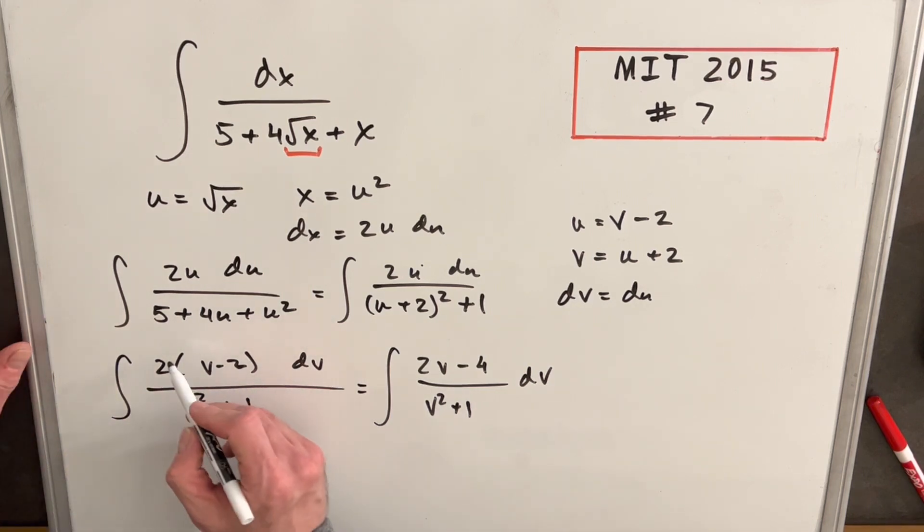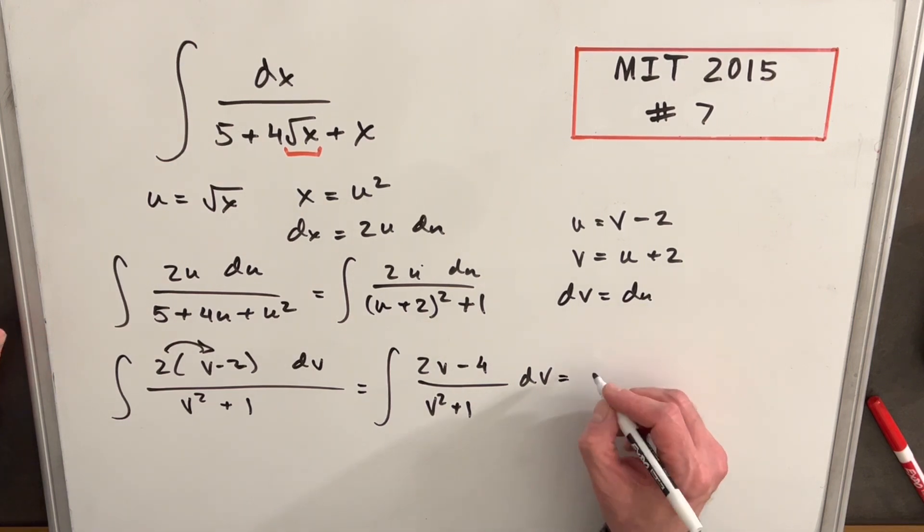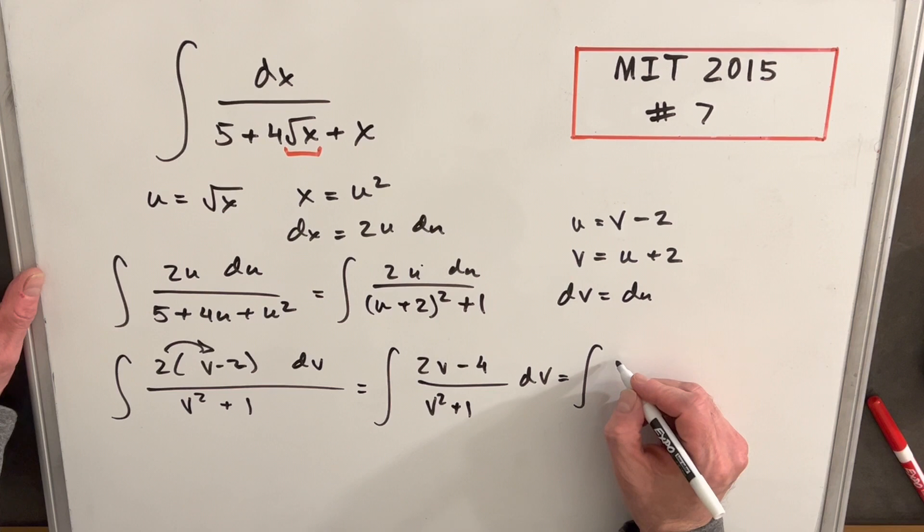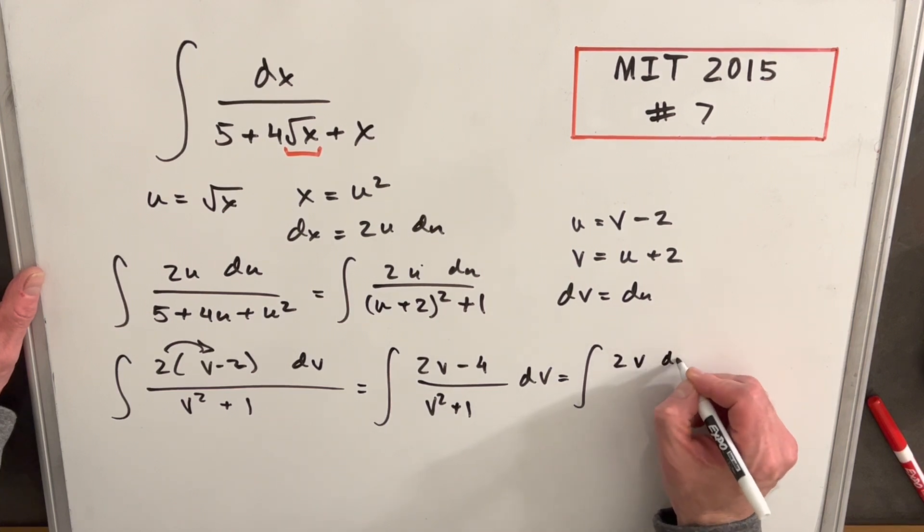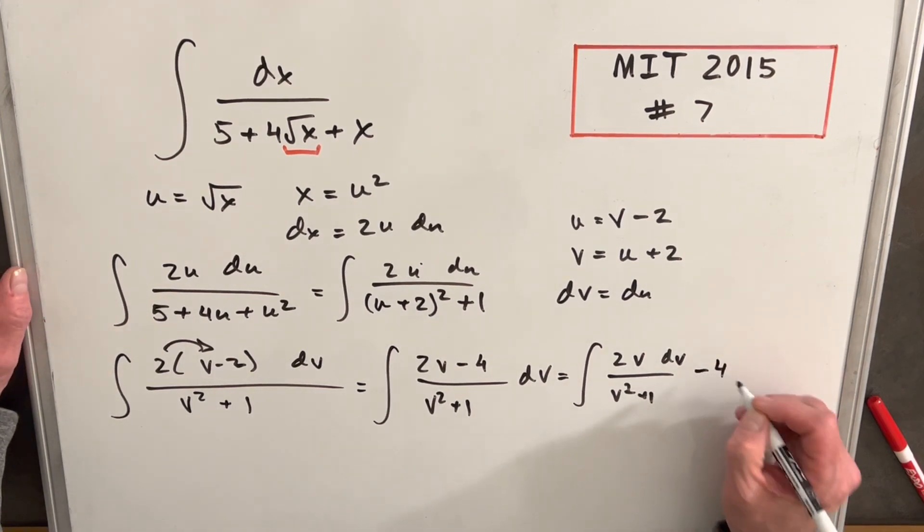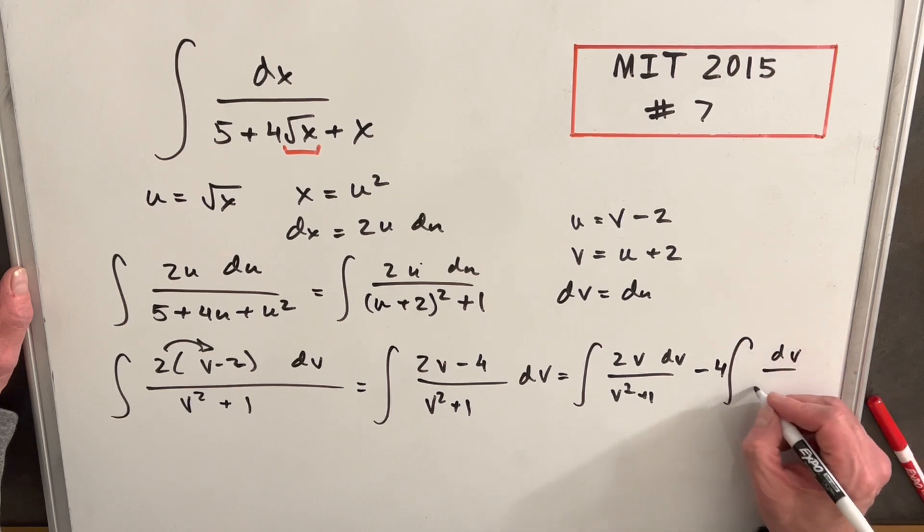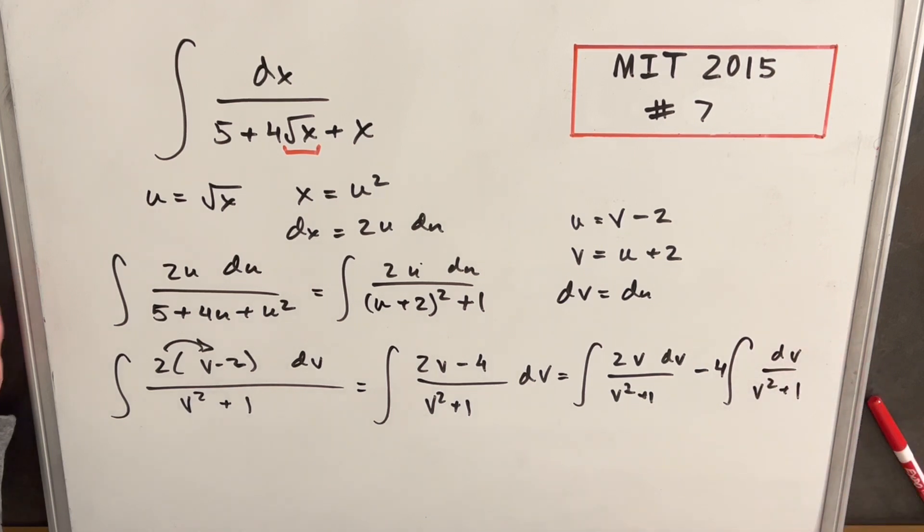Next, all I did is I distributed my 2 inside here to get 2v minus 4. And then I can split this into two integrals. I think they're both going to be easy to solve when we do that. So we'll have 2v dv over v squared plus 1. And for our second integral, we're going to have minus. I'm going to pull the 4 out front of the integral. And we're just going to have dv over v squared plus 1.